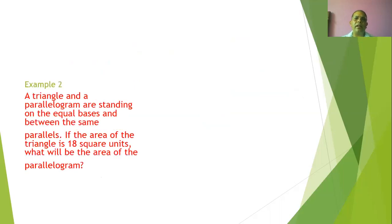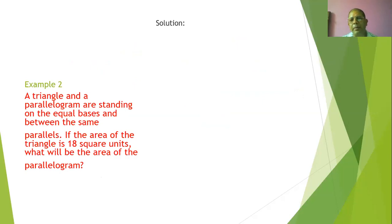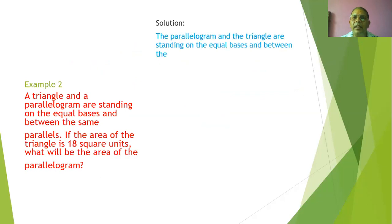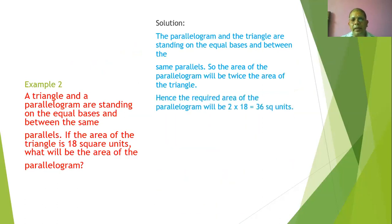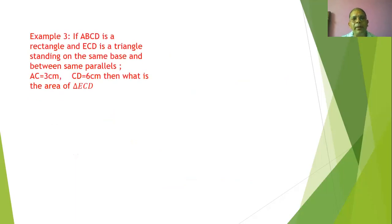Example number two: a triangle and a parallelogram are standing on the same base and between the same parallels. If the area of the triangle is 18 square units, what is the area of the parallelogram? The area of the parallelogram is twice the area of the triangle: 2 × 18 = 36 square units.